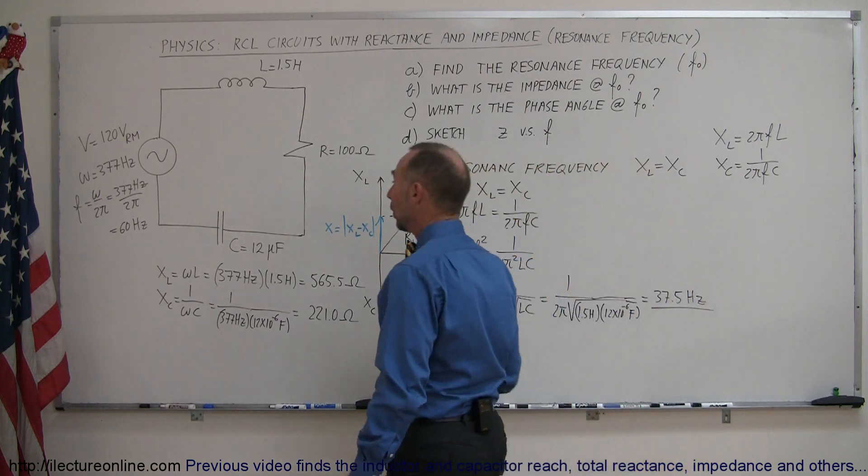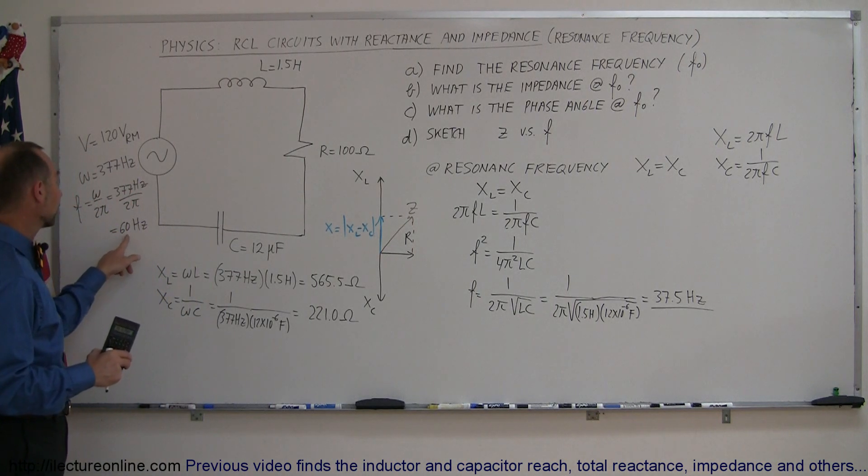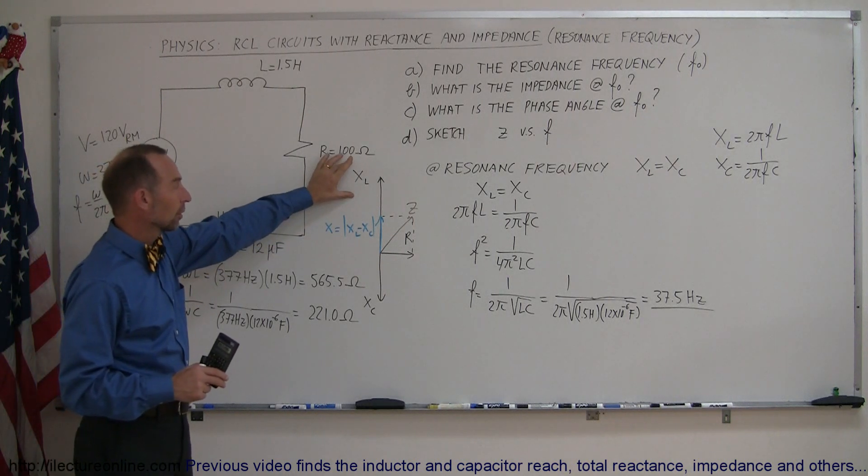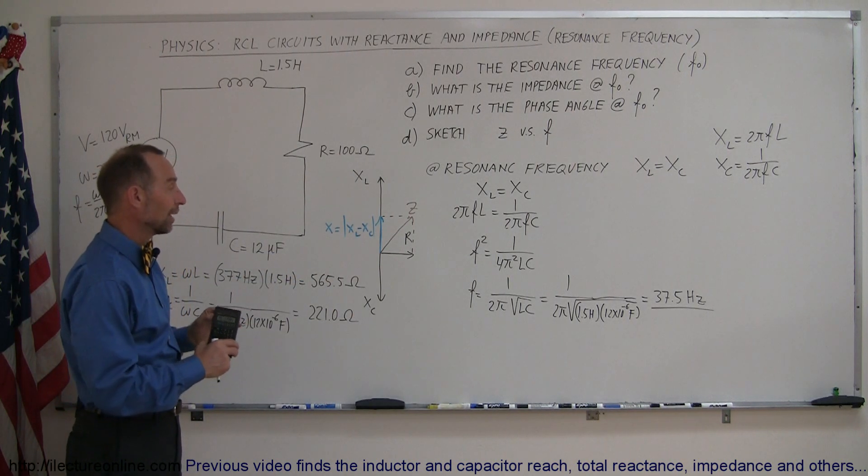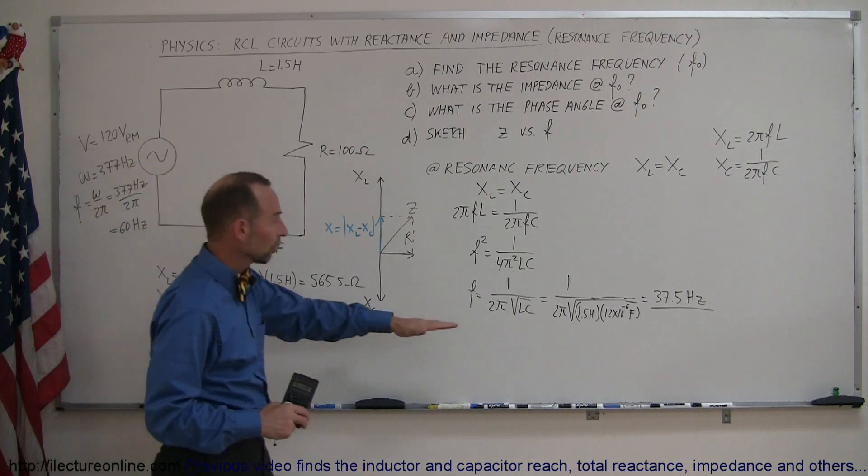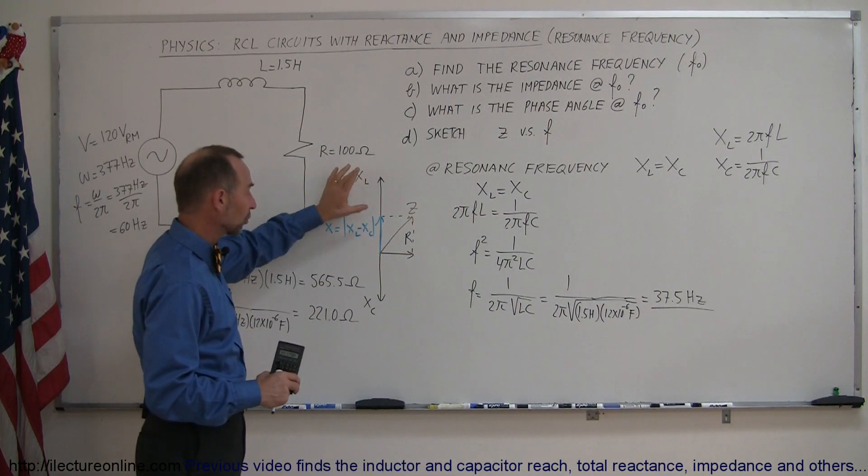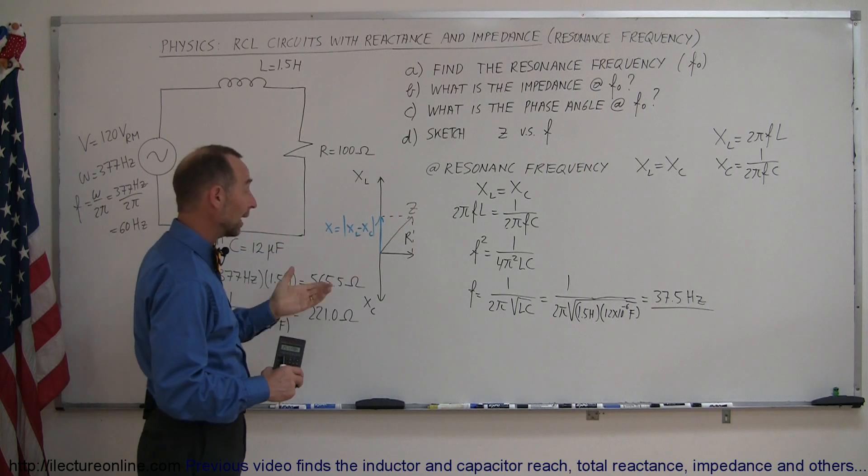So what that means is when the voltage varying source varies at a frequency of 60 hertz, then we have a much stronger inductive reactance and a much weaker capacitor reactance, and so that's not our resonance frequency. But if we lower the frequency to 37.5 hertz, then the X sub L, the inductive reactance, will equal the X sub C, and when you add them together it will cancel out.